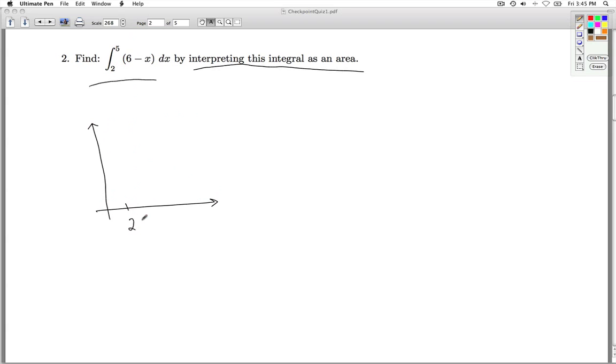We're integrating over the interval 2 to 5. The function value, or the function rather, the integrand, is 6 minus x. So if I graph y equals f of x, I'm going to get myself a line.